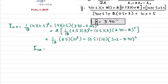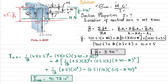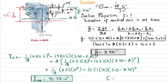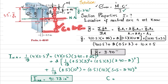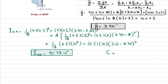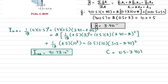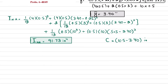Now we have I = 91.73 in⁴. Next we need c, the maximum distance from the neutral axis to the outermost fiber. The neutral axis is at 3.40 inches from the top, so the larger distance is downward to the bottom. Therefore c = 10.5 − 3.40 = 7.10 inches. Now we have all values needed.